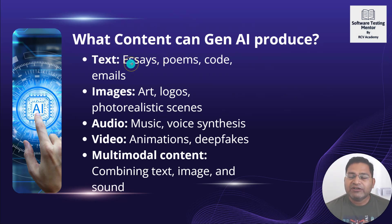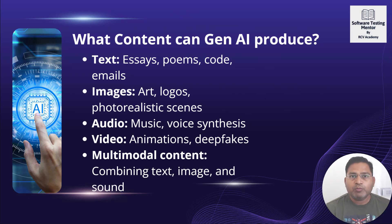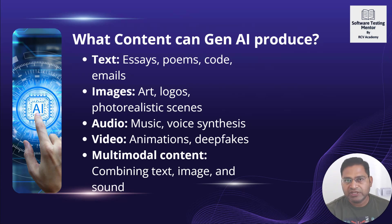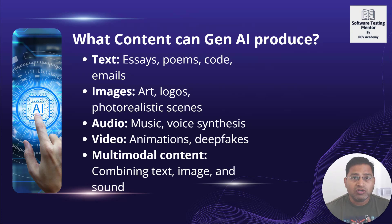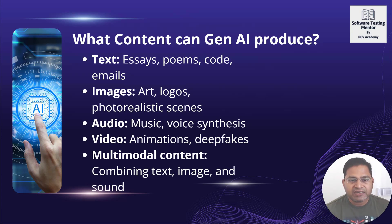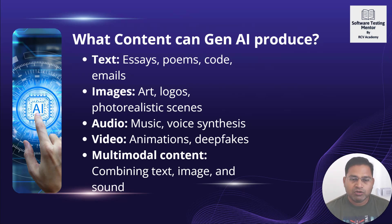The content that can be produced by Gen AI includes essays, poems, code, and emails. For example, GitHub Copilot helps you write code snippets or even a whole framework structure from a prompt. You can also create images such as artwork, logos, and photo-realistic scenes. Audio and video content like deepfakes, voice synthesis, and music are also possible, along with multimodal content that combines text, image, and sound to create realistic videos.